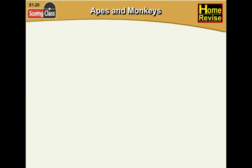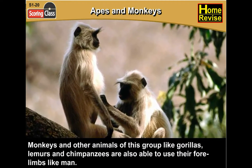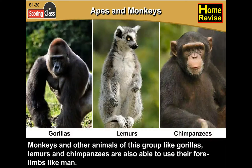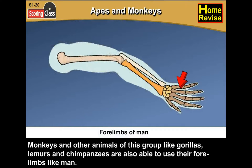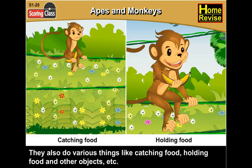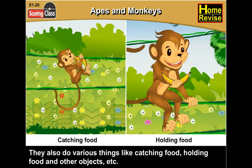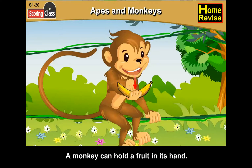Apes and Monkeys. Monkeys and other animals of this group — like gorillas, lemurs, and chimpanzees — are also able to use their four limbs like man. They also do various things like catching food, holding food, and other objects. A monkey can hold a fruit in its hand.